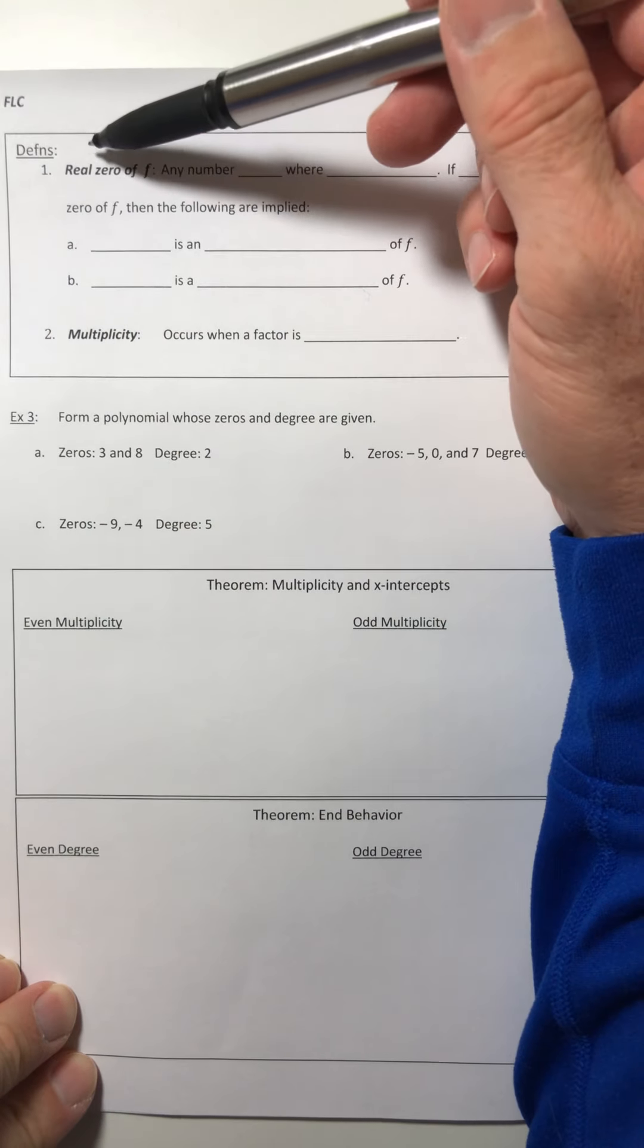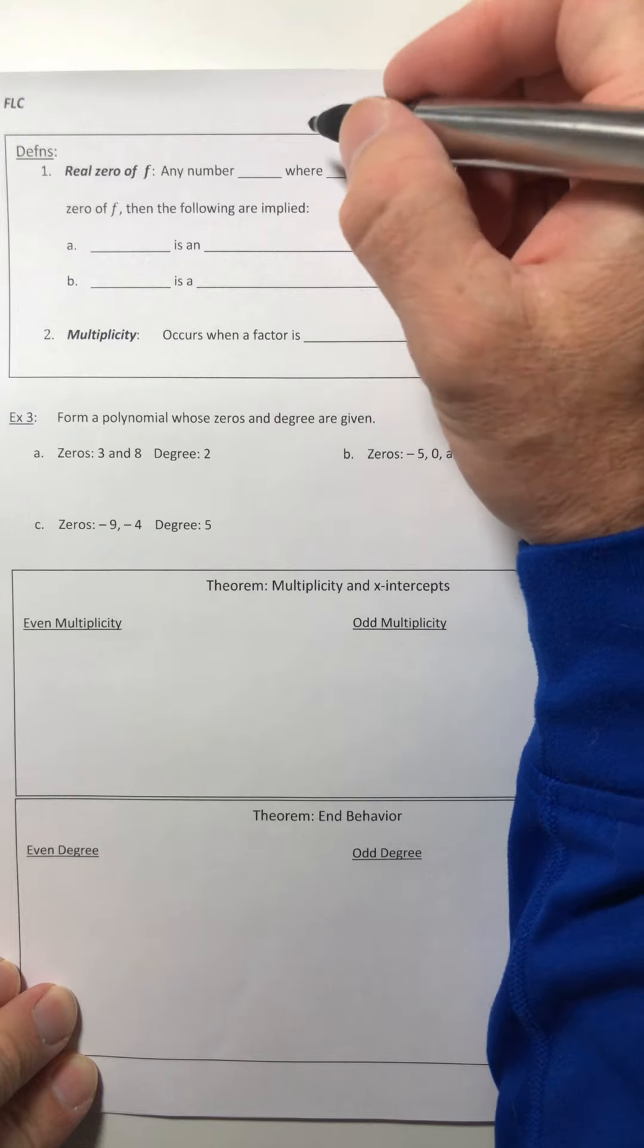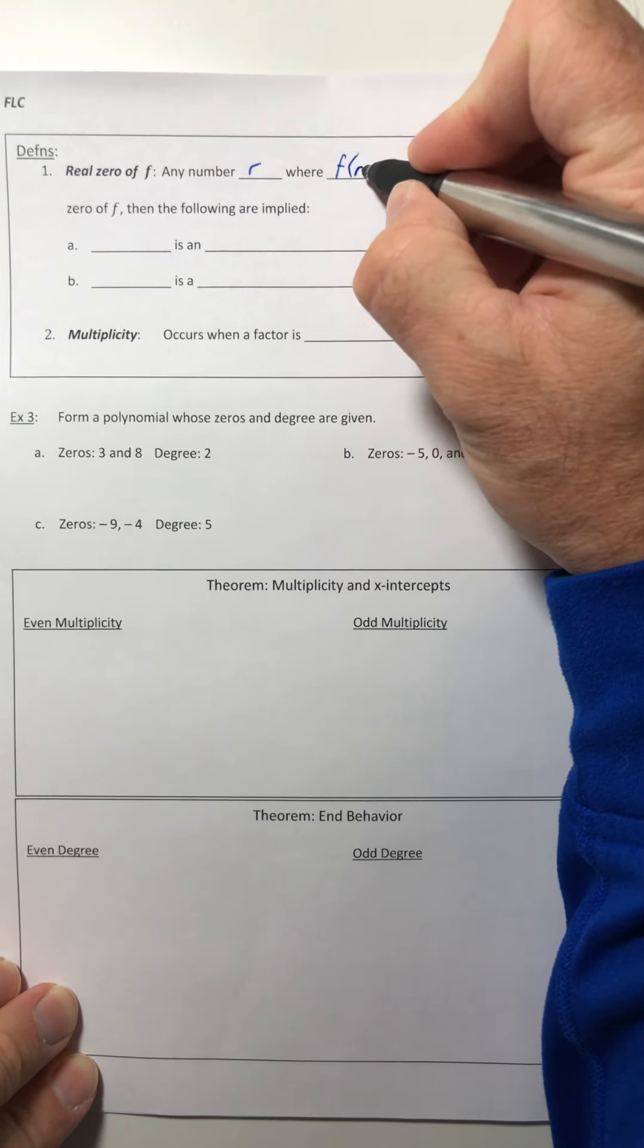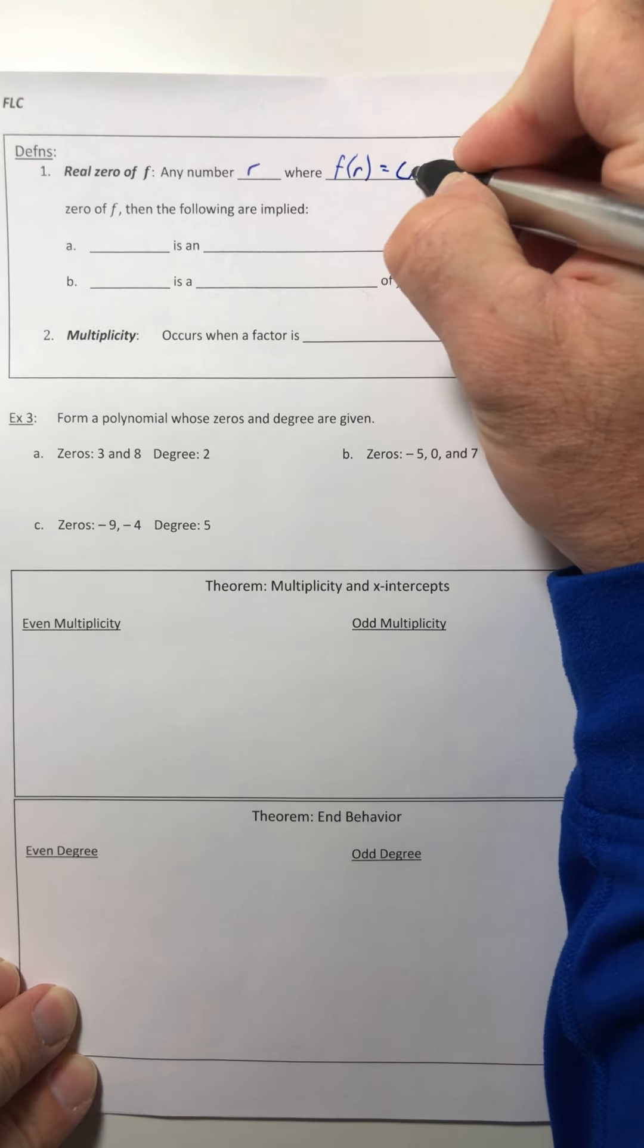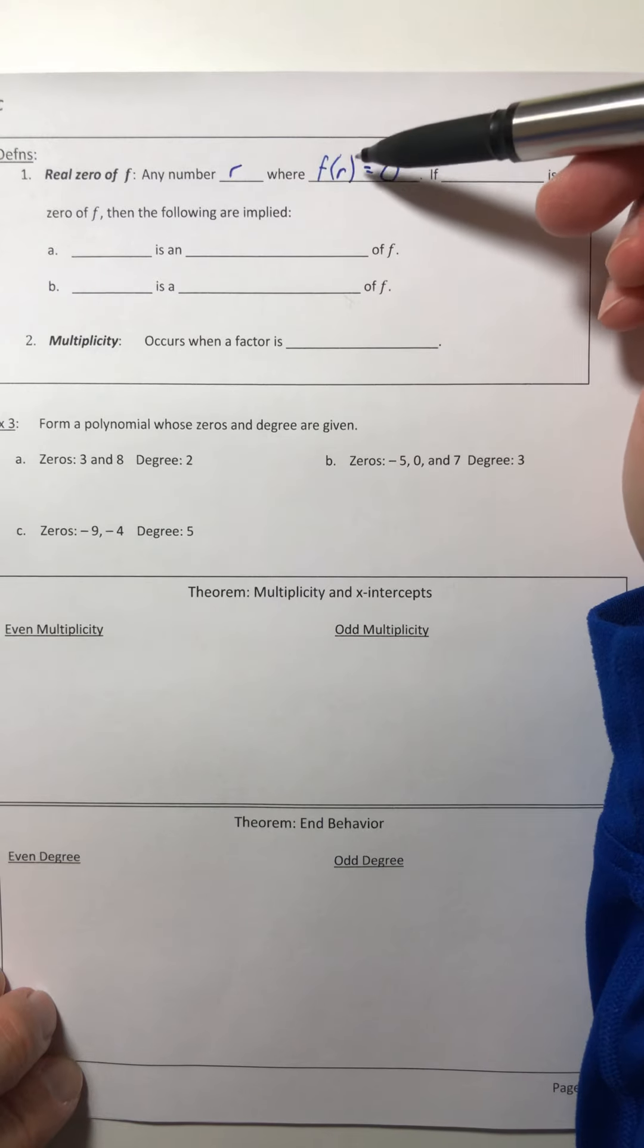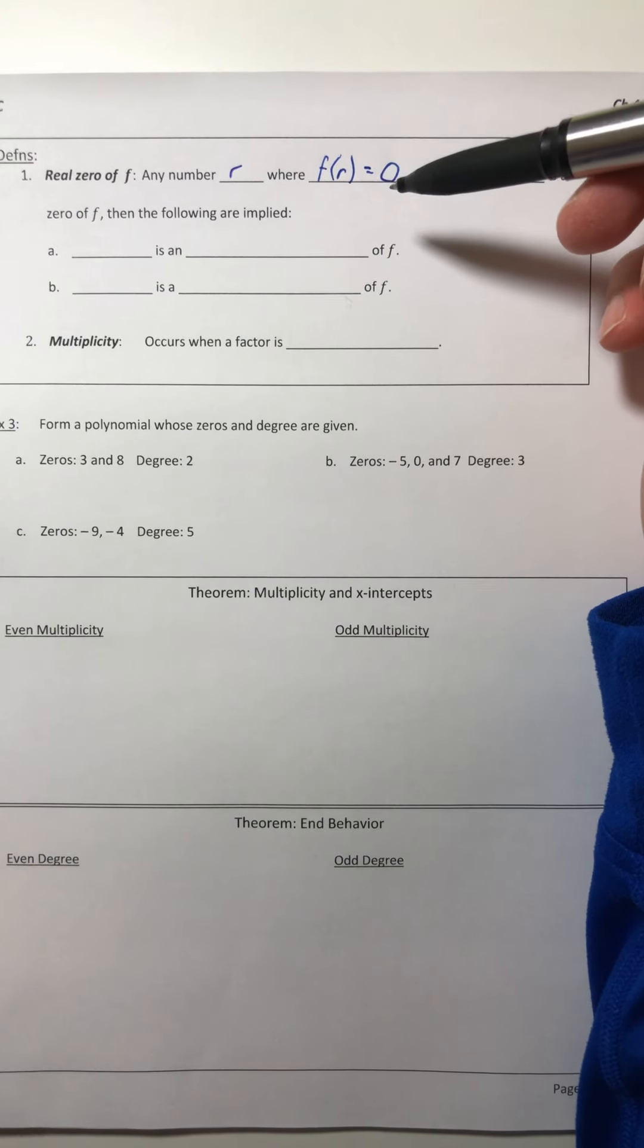So for the real zero of f, what they're talking about is any number r where f of r is equal to zero. So if you plug that number r into the function and you get zero, that's called a real zero.